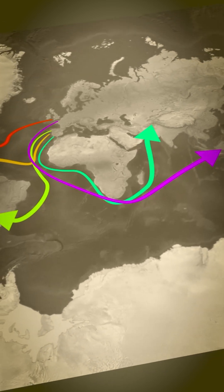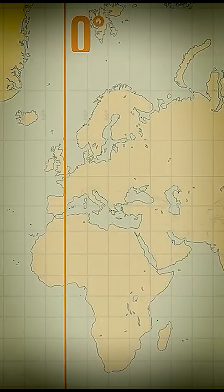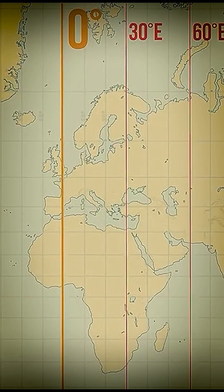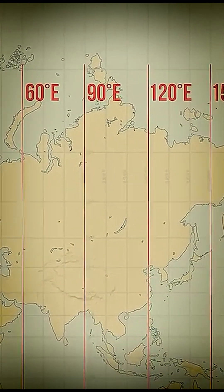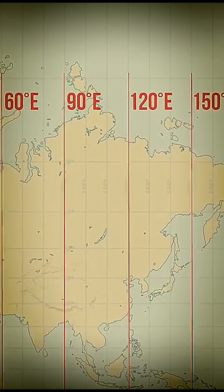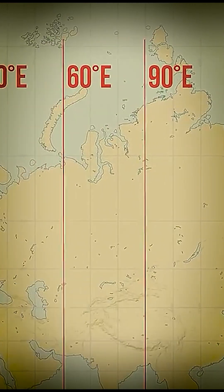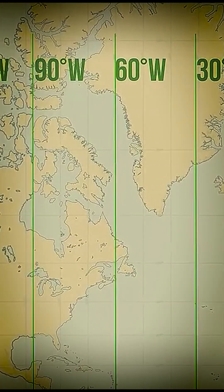As a result, global history and geographical perspectives became Eurocentric. The world's time zones were also divided using the Mercator projection method, where Europe was placed at the center.